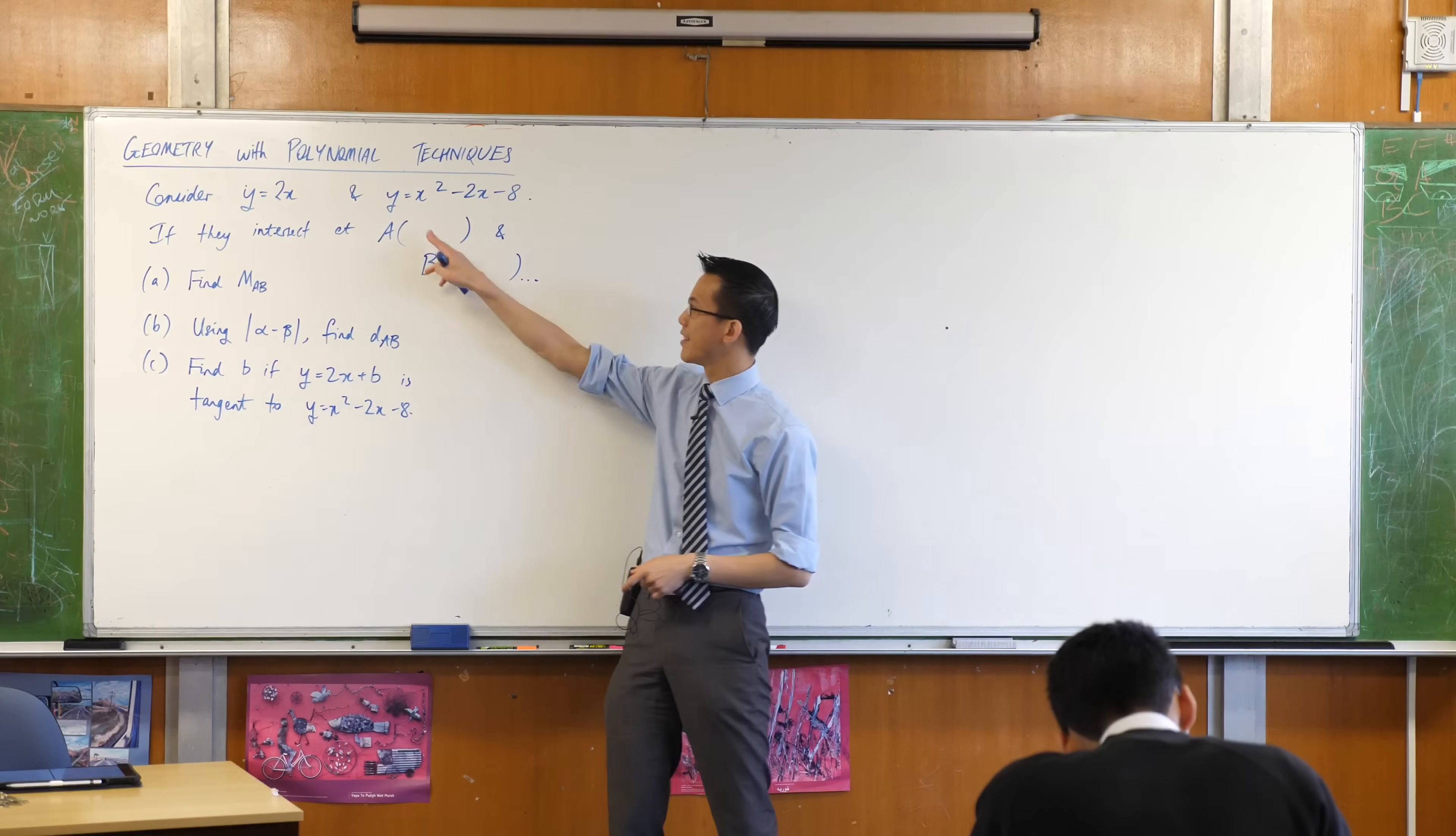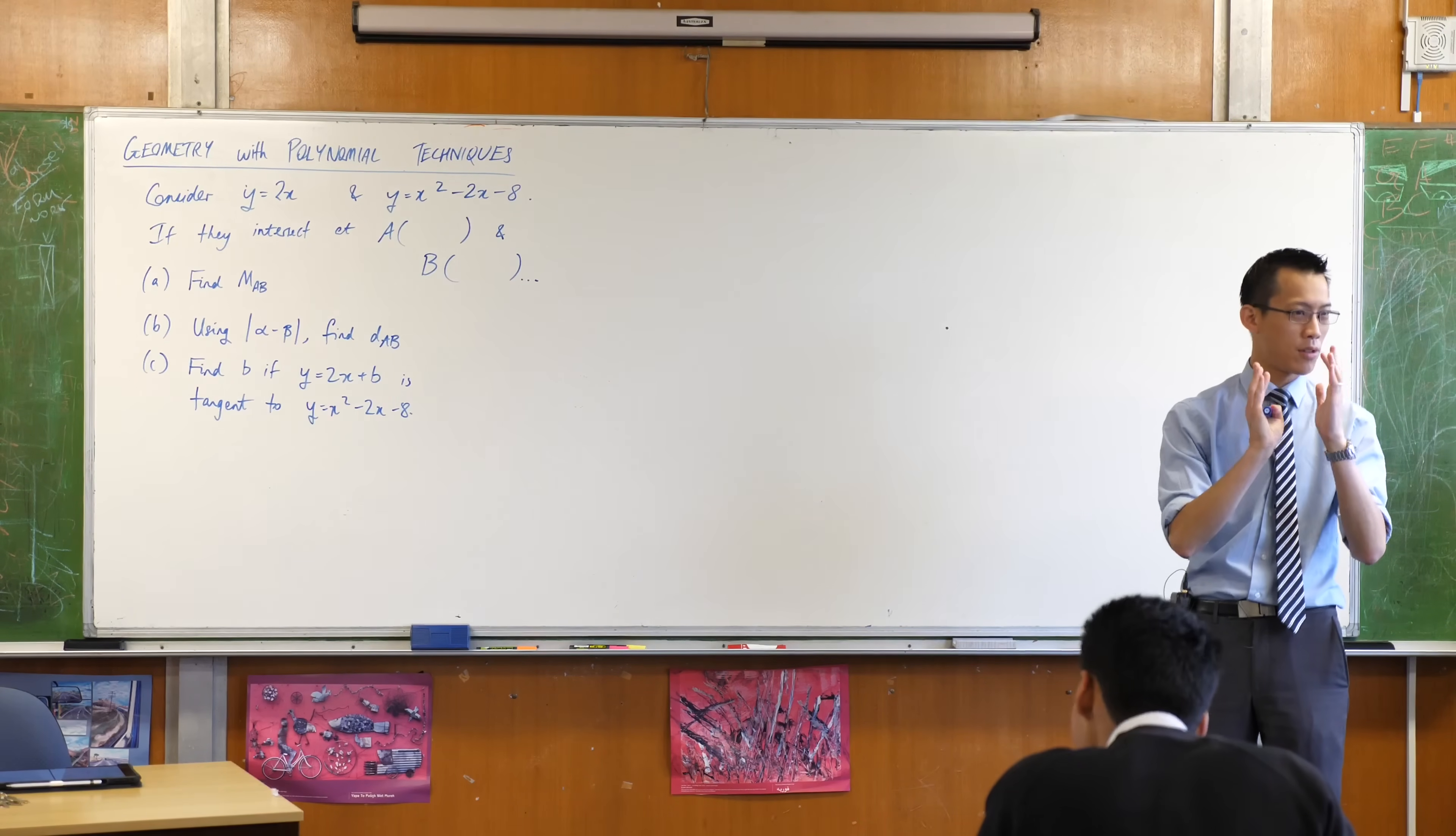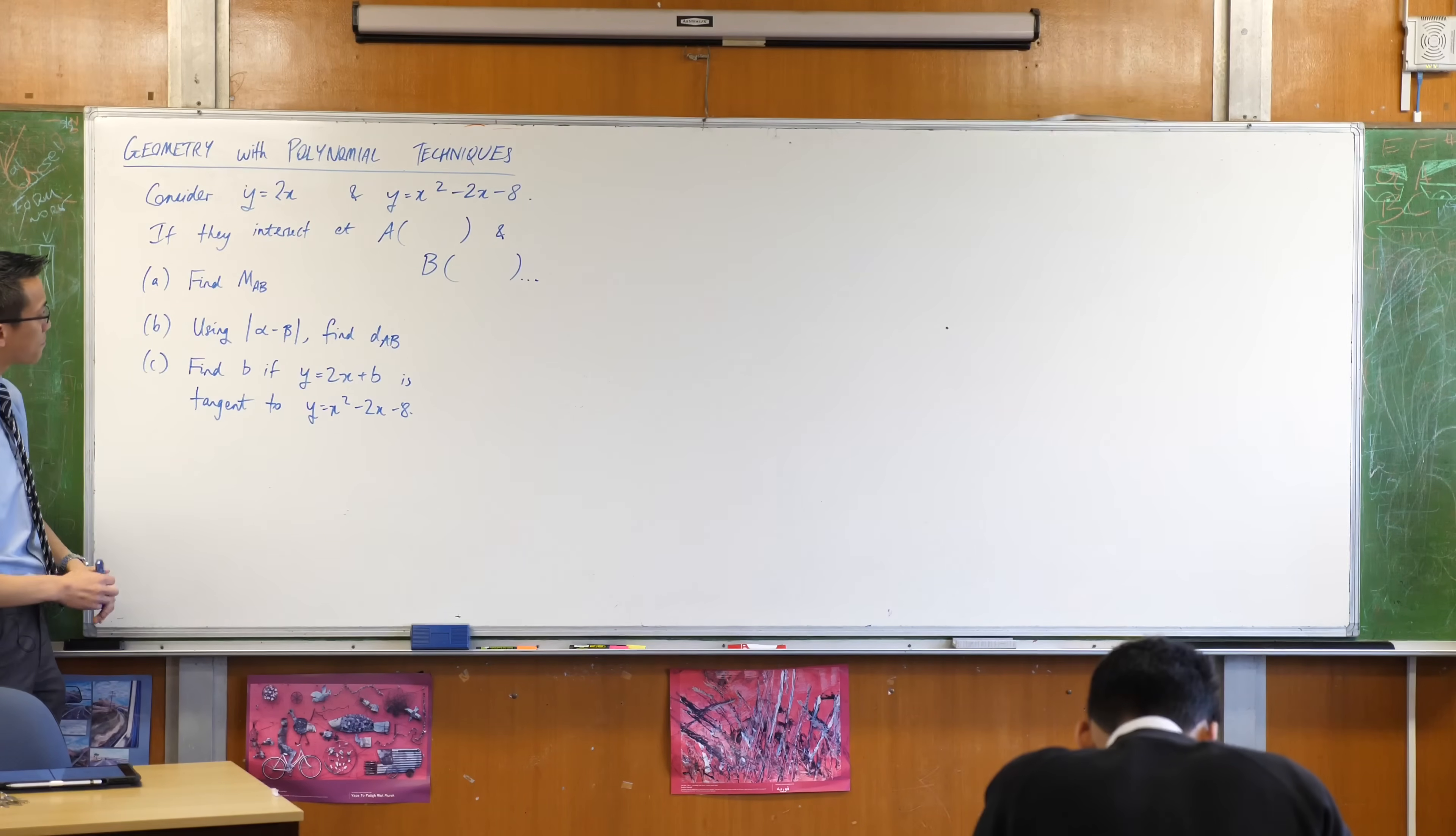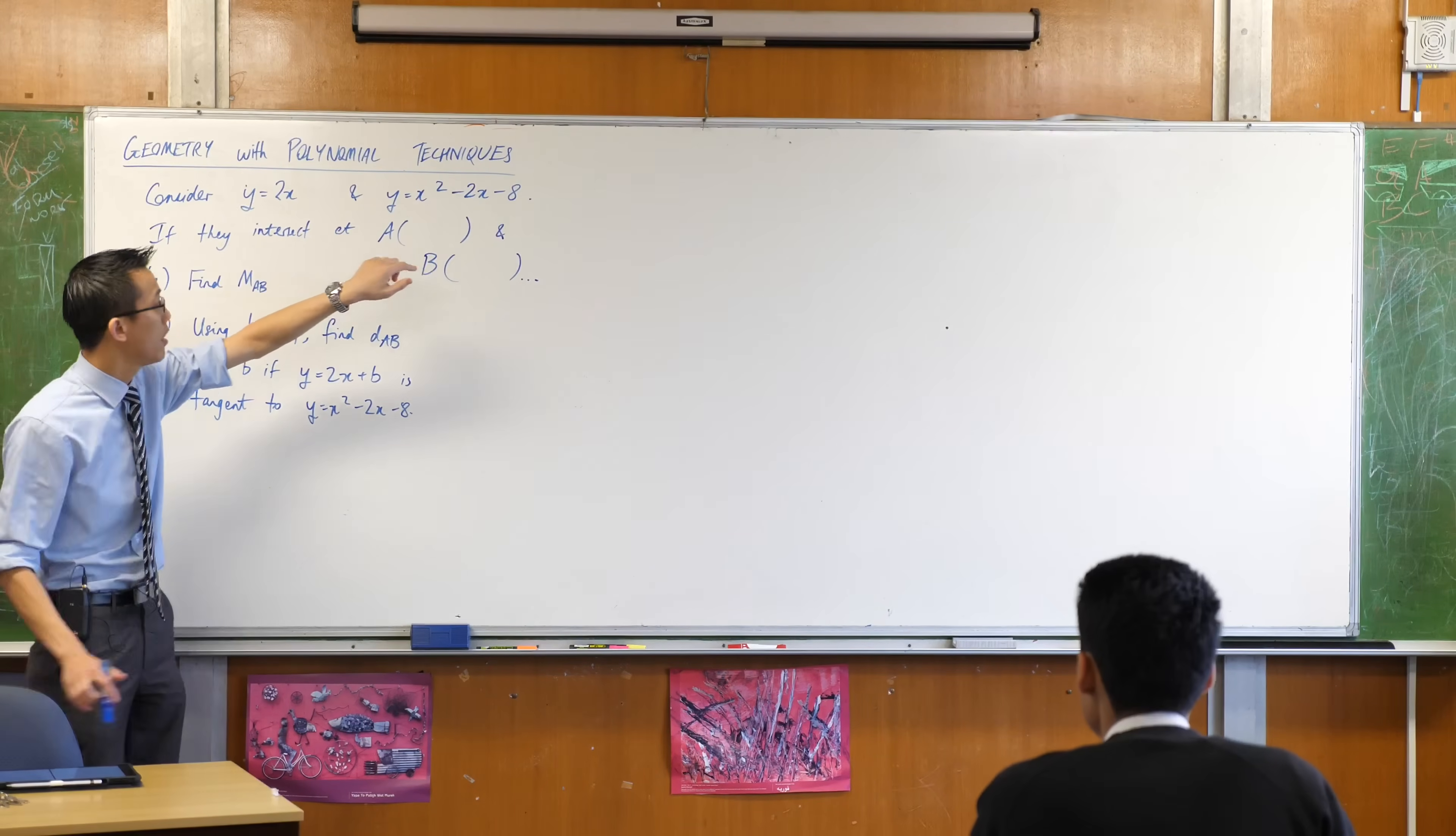I've put in blanks for the coordinates of A and B. We can name them however we want. How do you normally find points of intersection? You would take these two equations and solve them simultaneously. Have a look at what equations they are - when you solve equation one and equation two simultaneously, what kind of equation do you create?